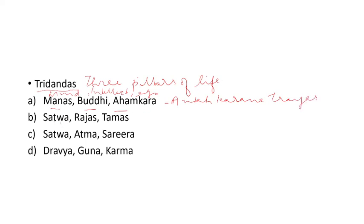The second option is Sattva, Rajas, Tamas. We have heard of Sattva Rajas Tamas — these are the three Gunas, three qualities. Three qualities associated with the mind. We can say three Gunas, three mental qualities. So we want three pillars — that is not three Gunas. The first was Antahkarana Traya.